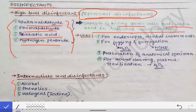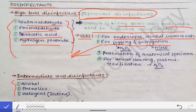High-level disinfectants are used for endoscope disinfection and dental instrument disinfection. They are also used for fogging and fumigation — remember, in OT sterilization, H₂O₂ (hydrogen peroxide) is used for fogging, and formaldehyde (HCHO) is used for fumigation. These two are used for OT sterilization by the processes called fogging and fumigation.